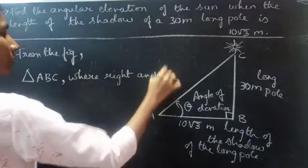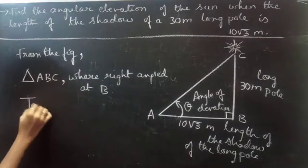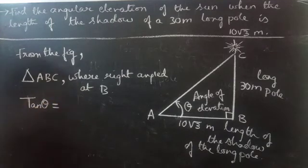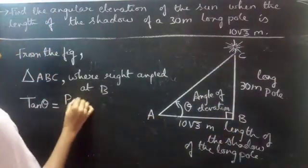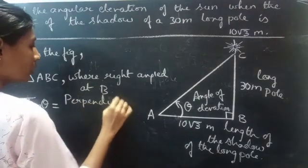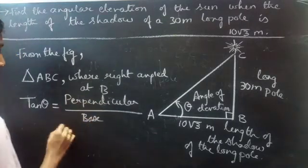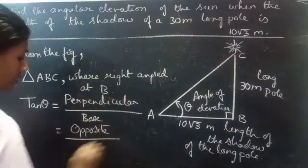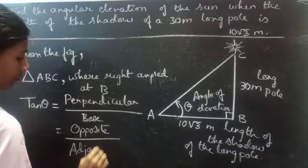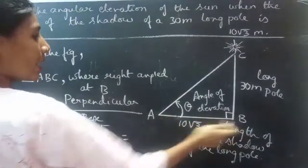Right angle at B. You get tan theta equals to BC — perpendicular by base, or you can say opposite by adjacent — which equals to BC by AB.